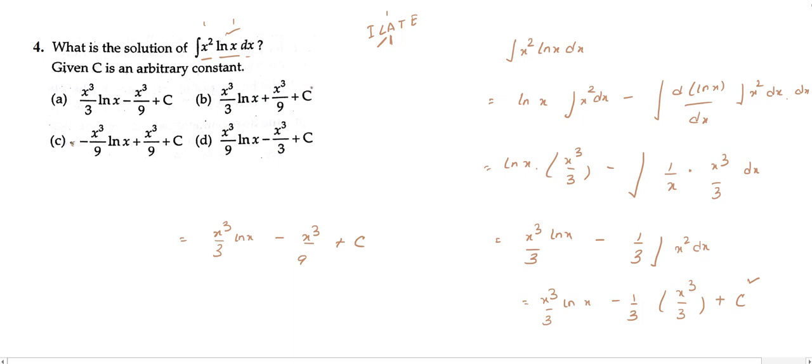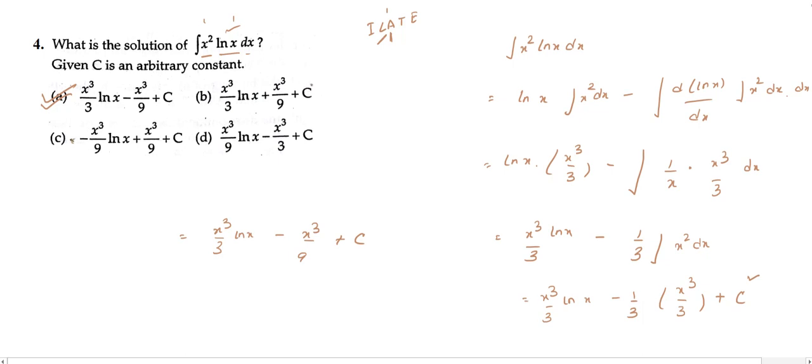So the final answer is x³/3 · ln(x) − x³/9 + c. Checking the options, option A gives x³/3 · ln(x) − x³/9 + c, so option A is our correct answer. We have now solved a few questions of IIT JAM Biotechnology which appeared in 2018.